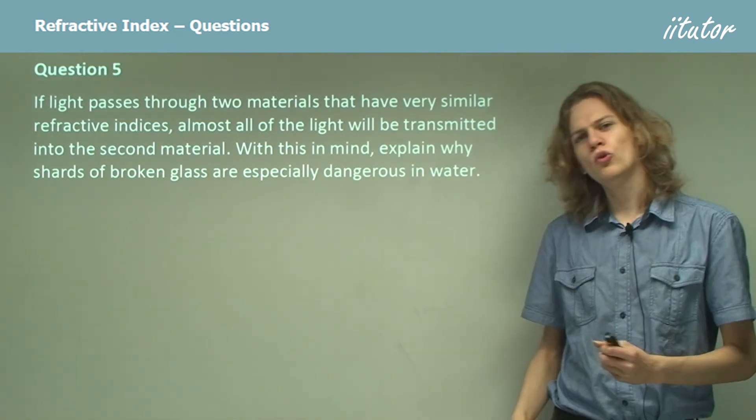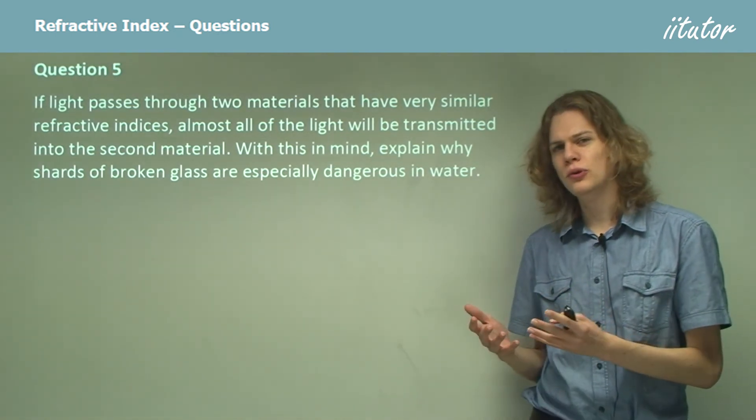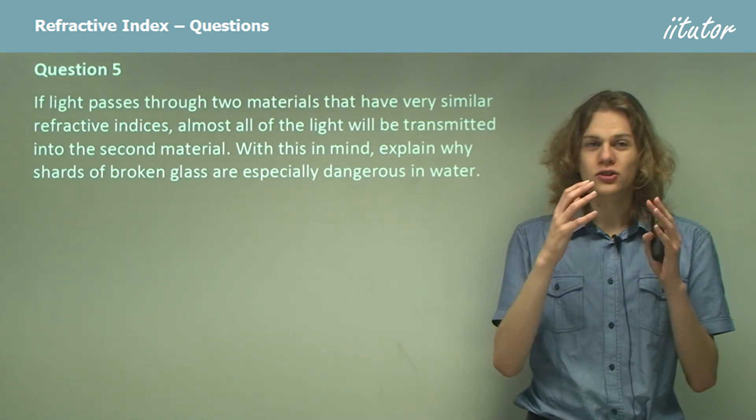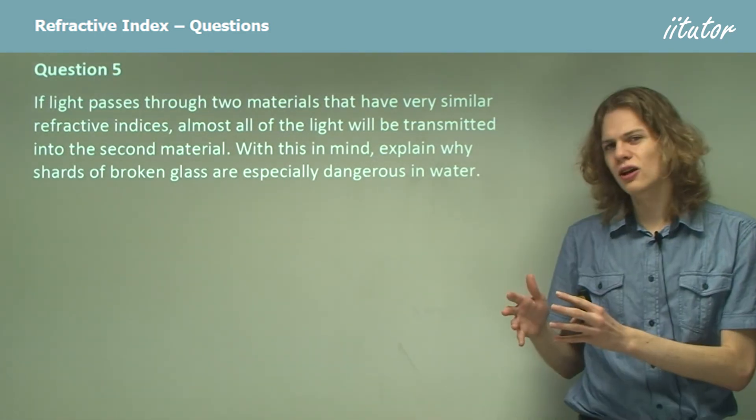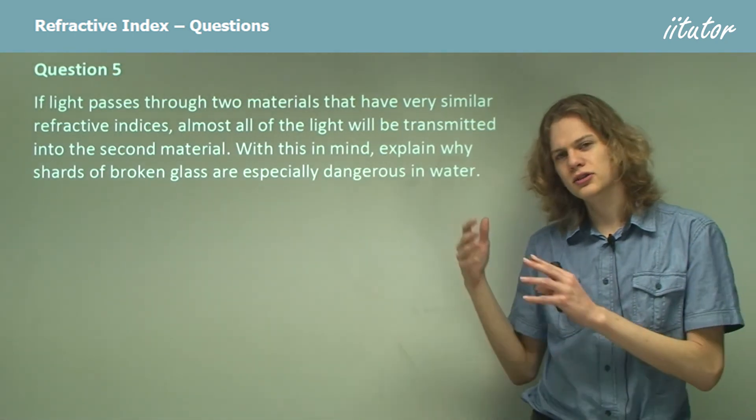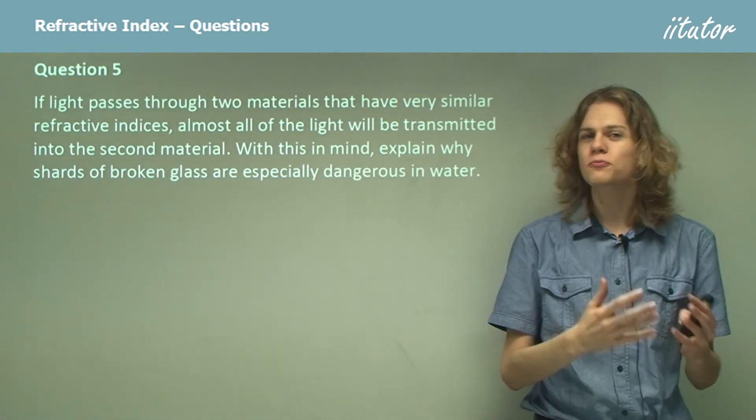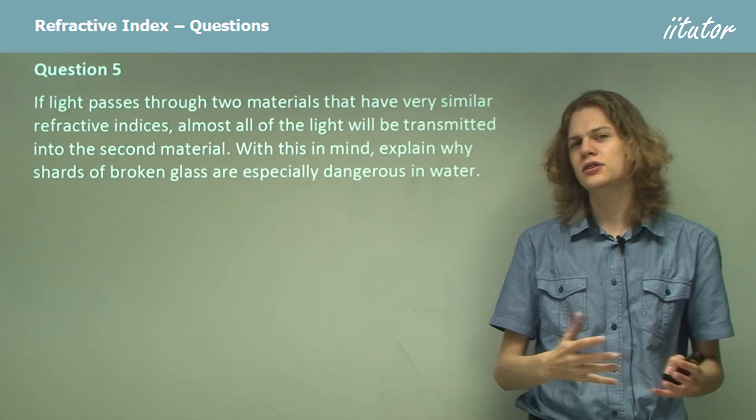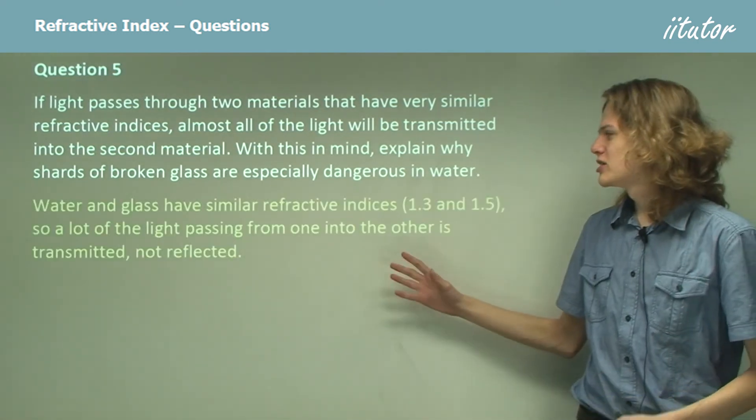But in water, water has a refractive index of 1.33. That means that it's got a similar refractive index to that of glass, and most of the light passes through. Additionally, the light passing through from the water into glass doesn't bend very much because the refractive indices are similar.